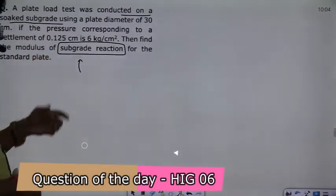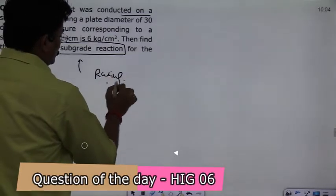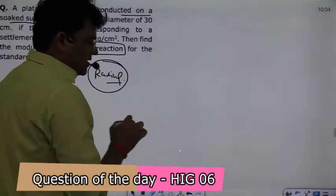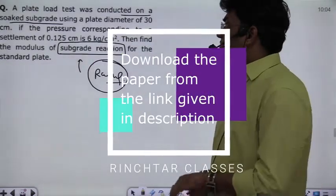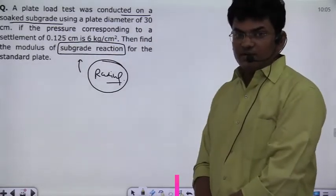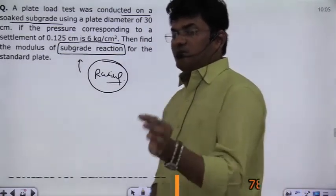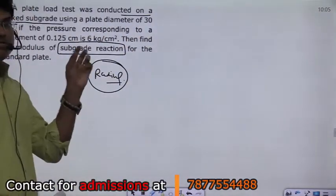So the soaked correction, and the other one is because of radius. Because the standard result is that you use a diameter of 75 cm for your plate, and in this question we have 30 cm of plate. So if you use any other size of the plate and you will calculate the soil subgrade, then you will always report standard value for the standard plate.